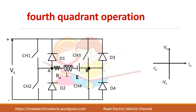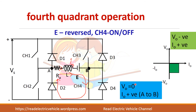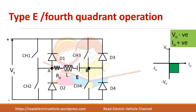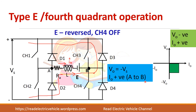For fourth quadrant operation, V0 should be negative and I0 should be positive. When CH4 is on, current flows in the positive direction and output voltage is zero. When CH4 is turned off, current flows through diode D3 and returns to the supply. Now point B is connected to plus, so voltage is negative and I0 remains positive.